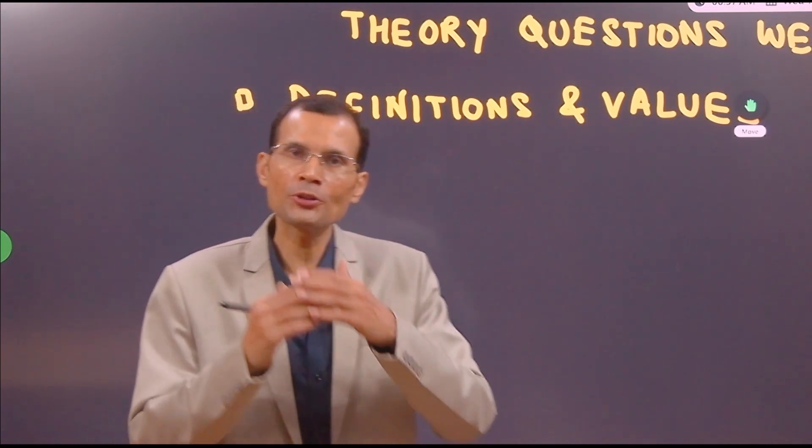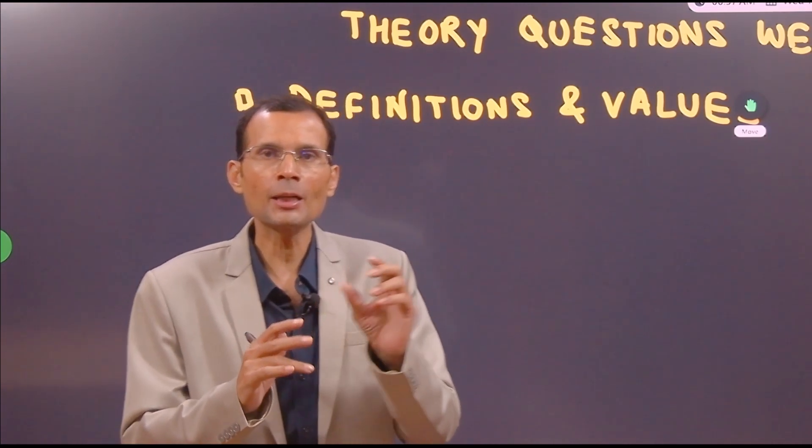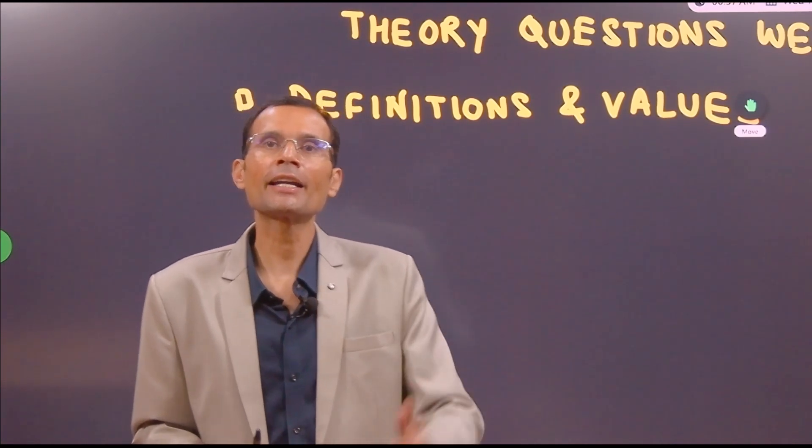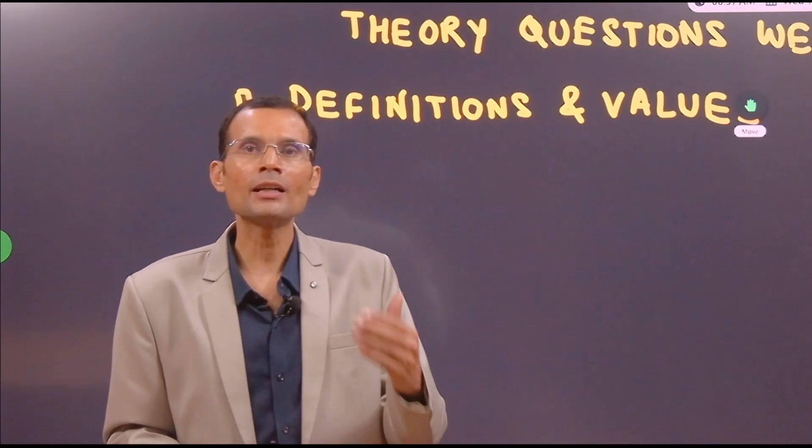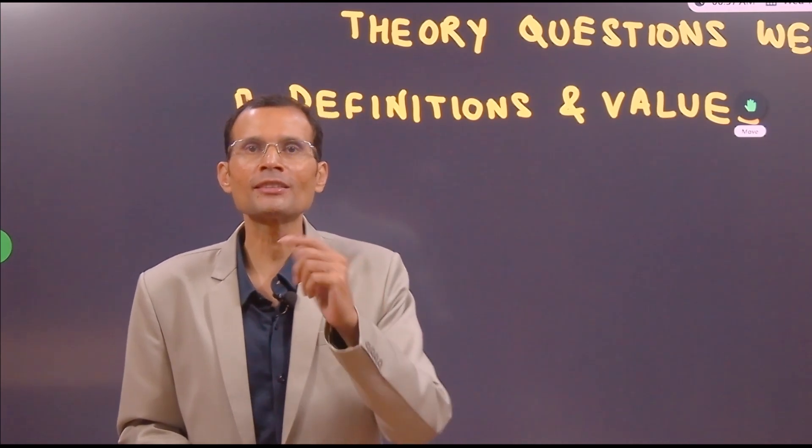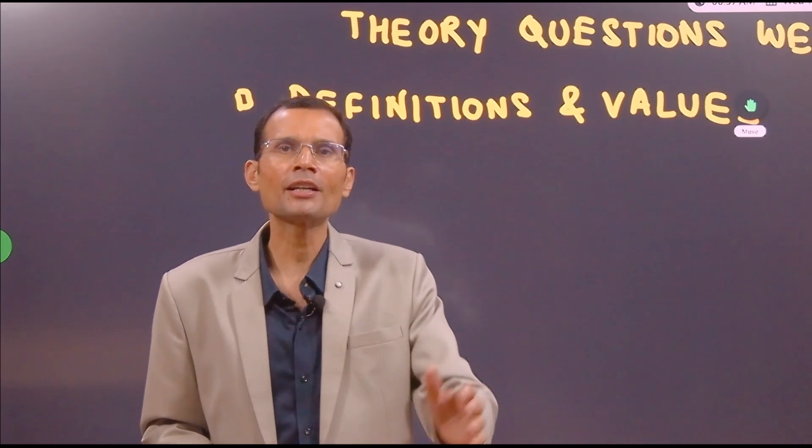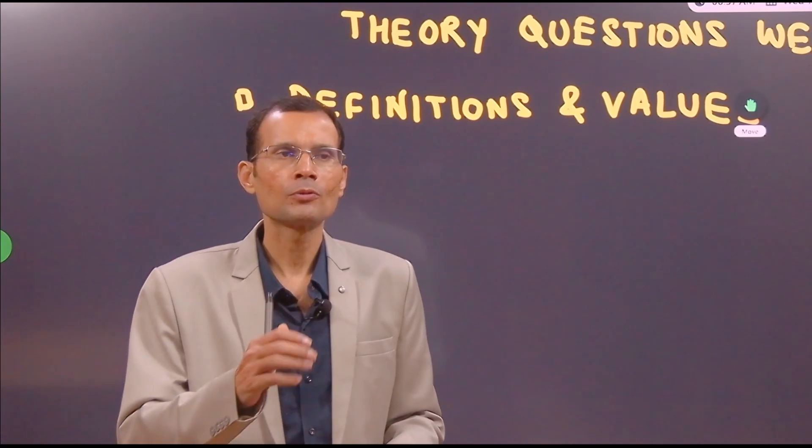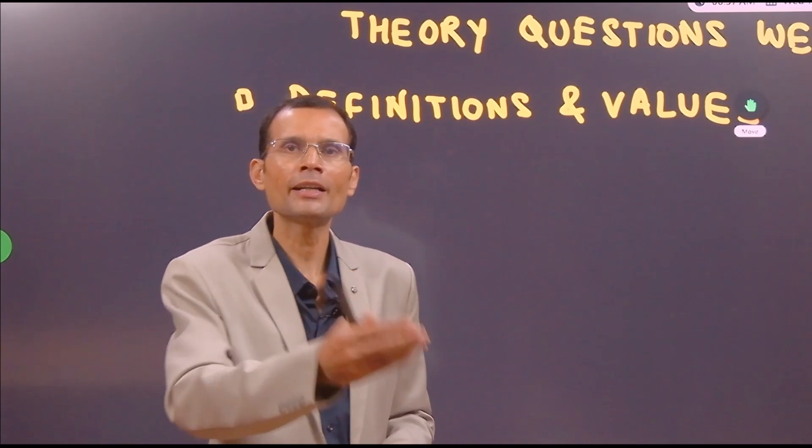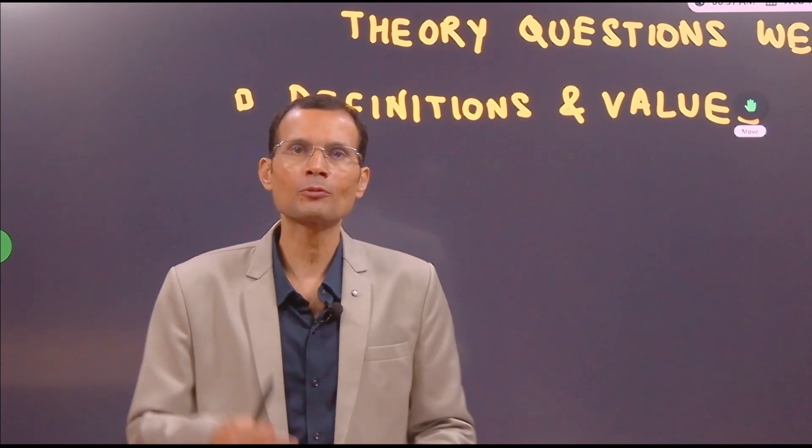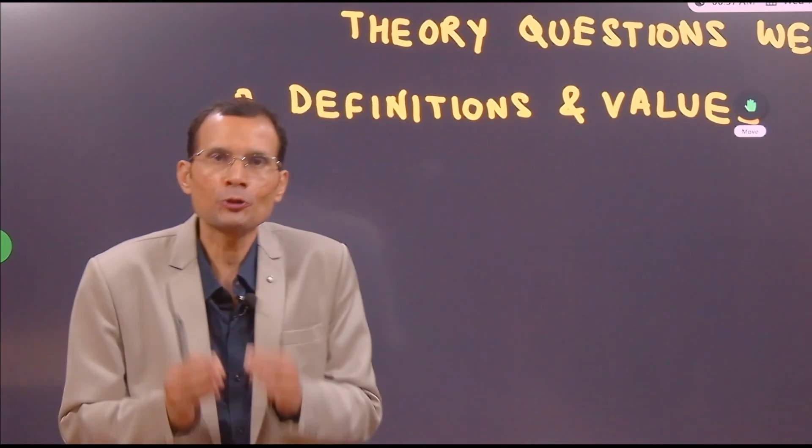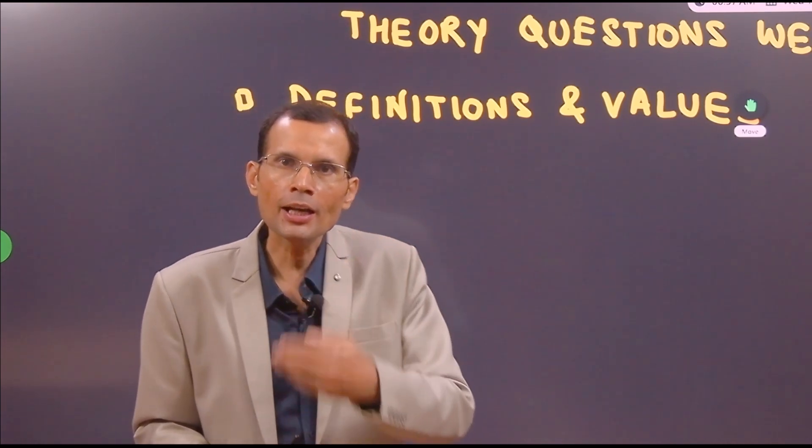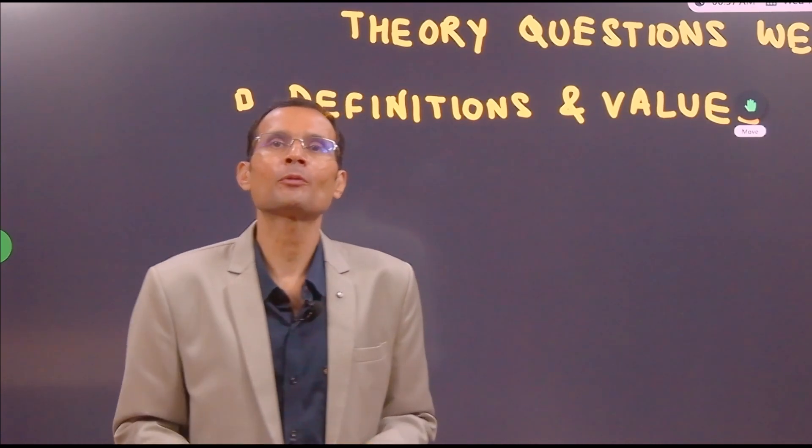And slowly you are going to learn what is a typical viva. So it all starts always with some kind of a definition. Define cardiac output. You will define it. Then the next question will be what is the value, what is the normal value? So let's say five liters per minute. Similar questions are asked in the viva. Define tidal volume, what is the normal value? Define dead space, what is the normal value? Define GFR, what's the normal value?